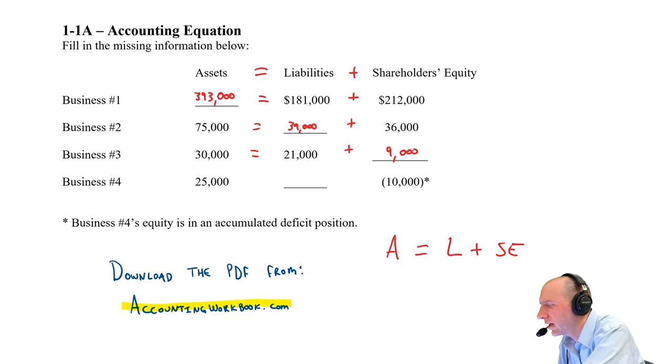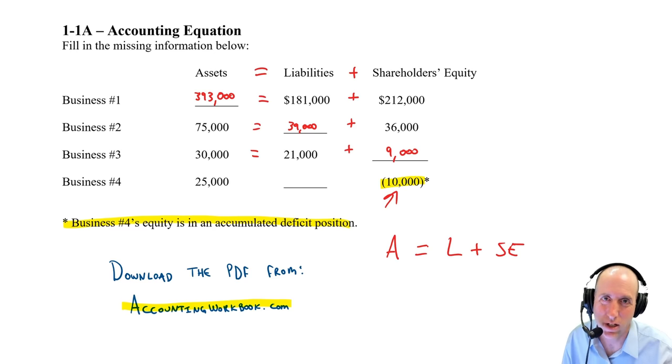Okay, the last one's a little bit funny. It says it's $10,000. You can see it's negative. And it notes that business four's equity is an accumulated deficit position. What does that mean? It means they have negative shareholders' equity.